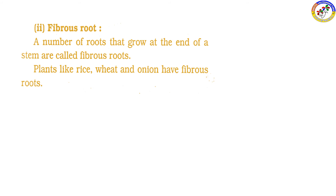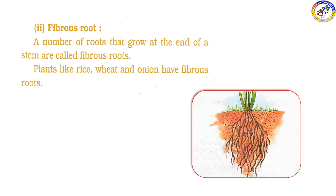Next, fibrous roots. The number of roots that grow at the end of the stem are called fibrous roots. Plants like rice, wheat, and onion have fibrous roots. Thank you. Have a nice day.